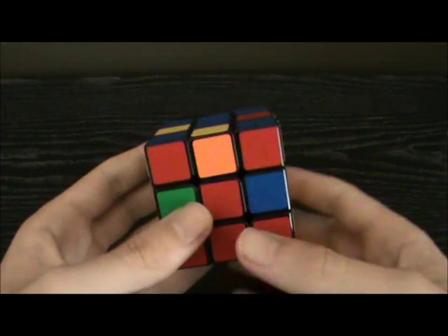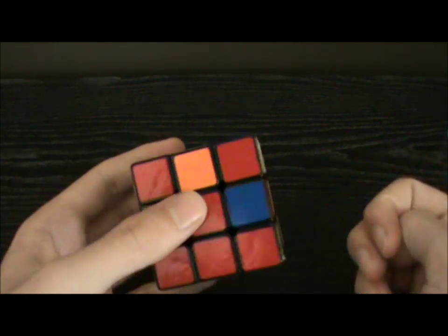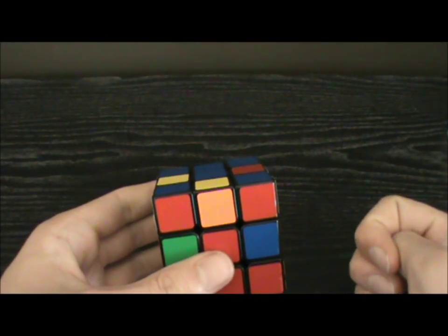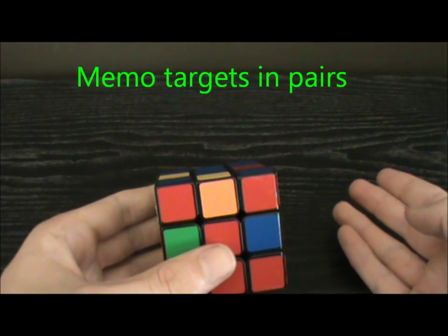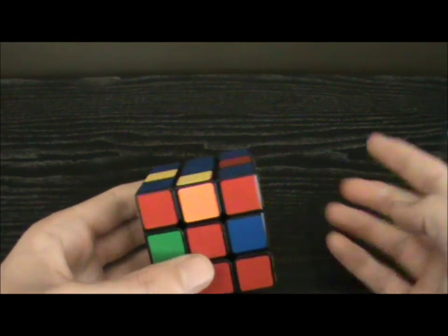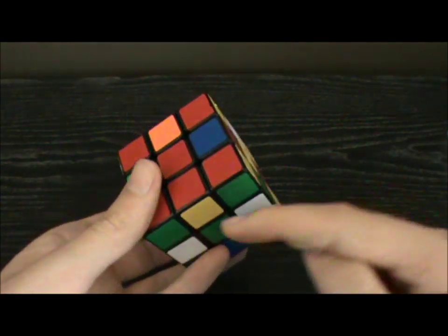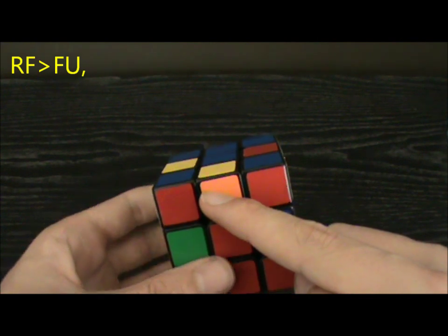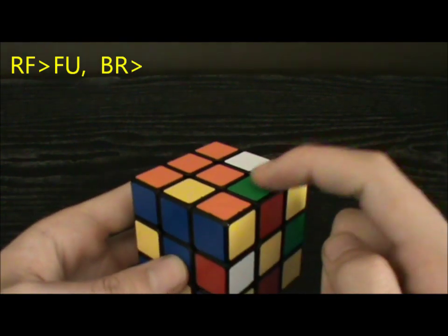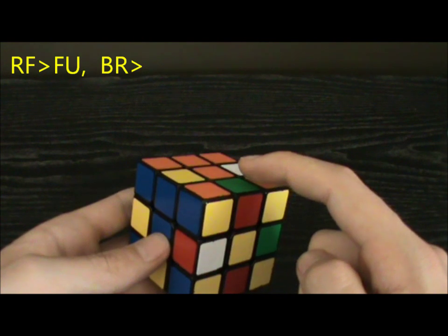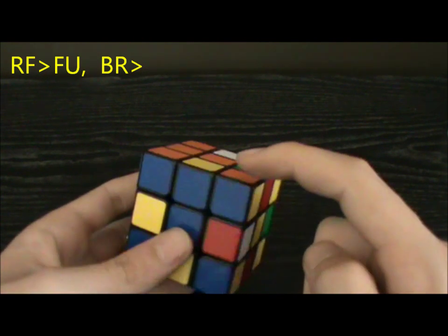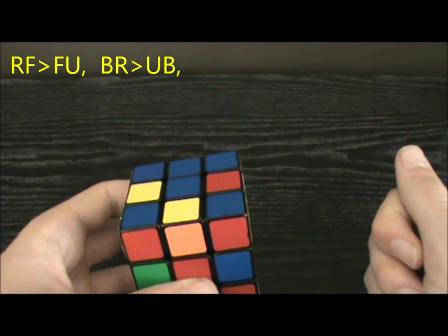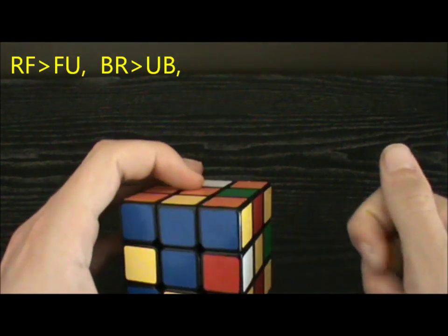Here's a scramble with all the corners solved. Obviously, the first thing to do is memorize all the targets. Ideally, you should be memorizing the targets in pairs. That way, you can keep track of the M slice easily. The first target is RF, which goes to FU, which goes to BR. Now we have to break into a new cycle. I'm going to choose to shoot to UB, since all you have to do to shoot to UB is M2. So I'm going to break into a new cycle by shooting to UB.